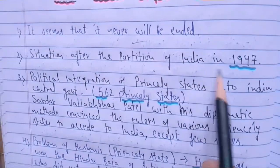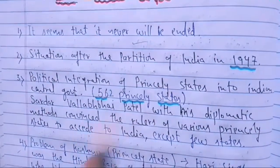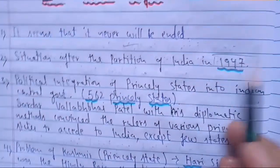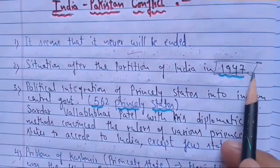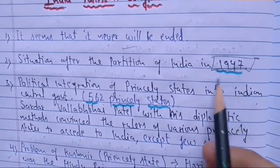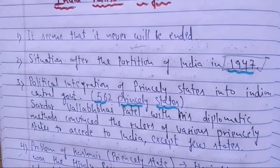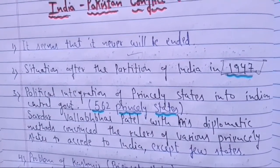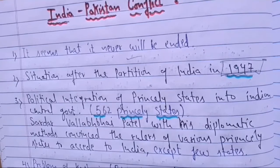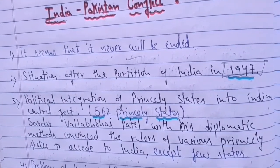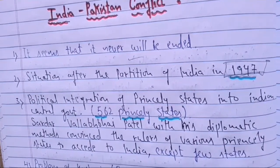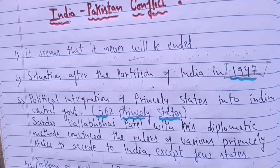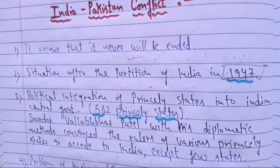To understand this particular problem, we will start from 1947, when India got independence. The Muslim League demanded a separate nation and there was a partition of India into India and Pakistan. The people of the Muslim religion were given a separate country called Pakistan, but the problem did not settle down here — it moved on further.